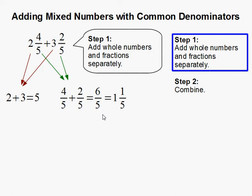Remember, 6 fifths is an improper fraction, so we must change it into a mixed number. 5 goes into 6 one time, 1 is left over, and 5 will be your denominator, and the 1 is the numerator.